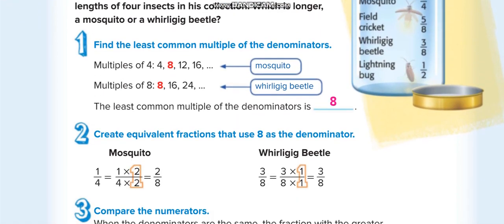The denominators are 4 and 8. To find the least common multiple, we write all the multiples of 4, then all the multiples of 8: 4, 8, 12, 16 and 8, 16, 24... Then we circle the common ones. The common ones are 8 and 16. The smallest common one is 8, so we will change both denominators to 8.